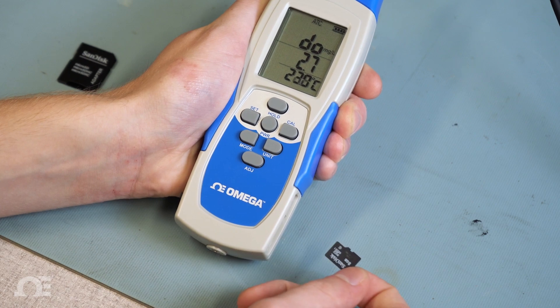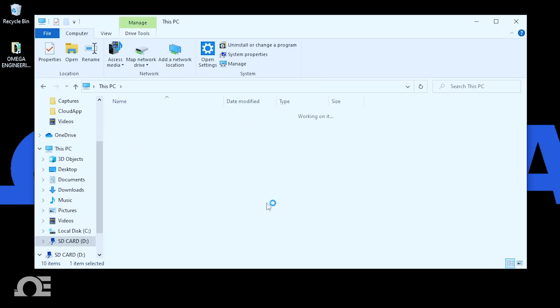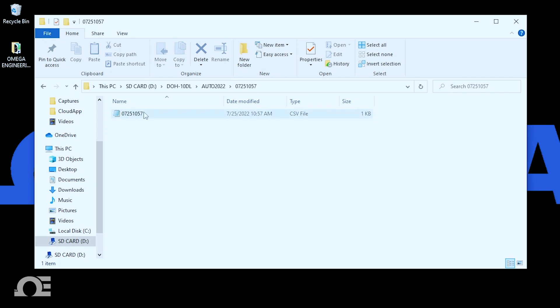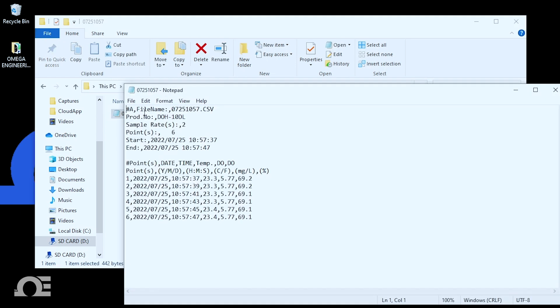You can now remove the SD card, connect it to your PC, find the folder labeled with the appropriate time and date, and import the CSV files into Excel. And there's our data.